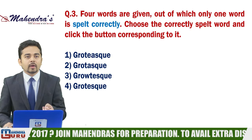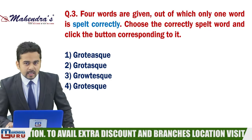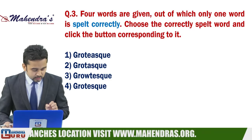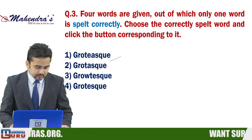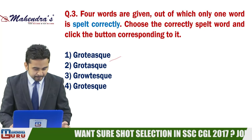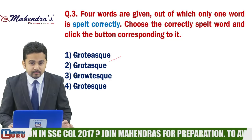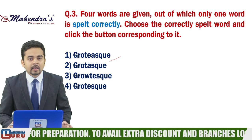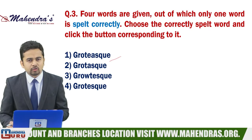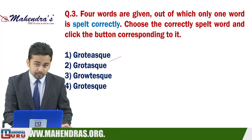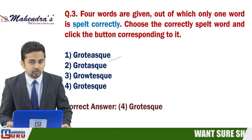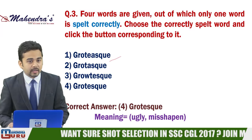Question number 3 - Correctly Spelled: 'Grotesque' का सही spelling find करना। Grotesque means ugly, mishappening। Option number fourth is absolutely correct - grotesque (g-r-o-t-e-s-q-u-e)। बाकी options में spelling mistakes हैं।